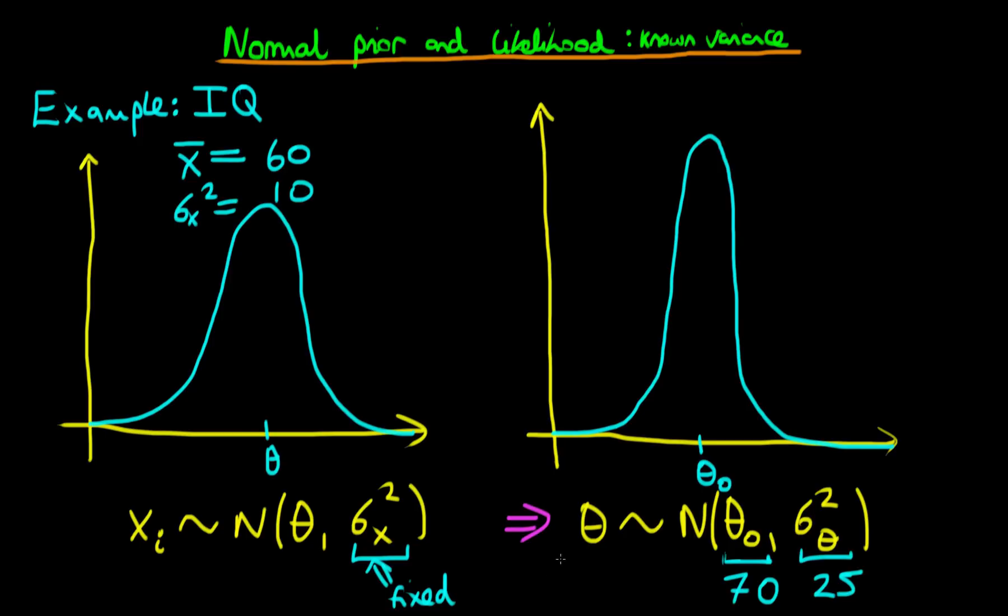There are two ways of viewing this prior density. One is just the straightforward way of saying that it's the way in which the professor expresses his uncertainty about the parameter theta. Another way of thinking about it is that the parameter theta, the population mean IQ scores level, actually varies from year to year, and the way in which it varies is given by this normal distribution here.